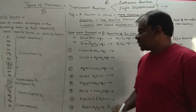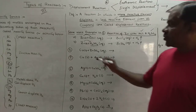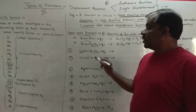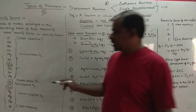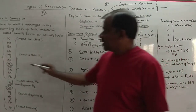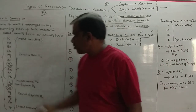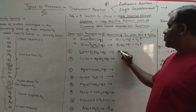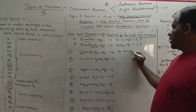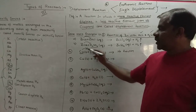Now, what happens if copper is placed in zinc sulfate solution? We need to check the reactivity series. Copper is below hydrogen, and zinc is more reactive than copper. So copper cannot displace zinc. There is going to be no reaction. As copper is less reactive than zinc, copper cannot displace zinc, so no reaction takes place.